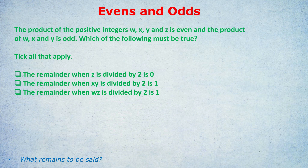Final question — do you want to try this one yourself? Pause the video and see what you get. The product of the positive integers W, X, Y, and Z is even, and the product of W, X, and Y is odd. Which of the following must be true? There's one key thing you've got to realize: the product of W, X, and Y is odd, which will only occur in one scenario if we're dealing with integers.